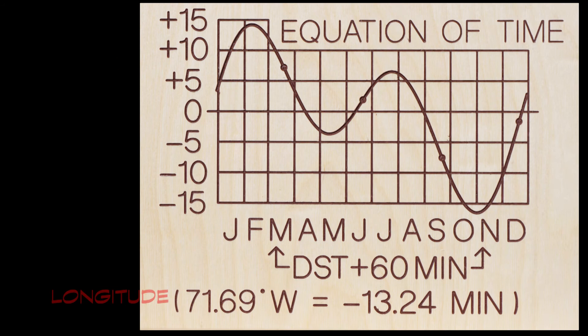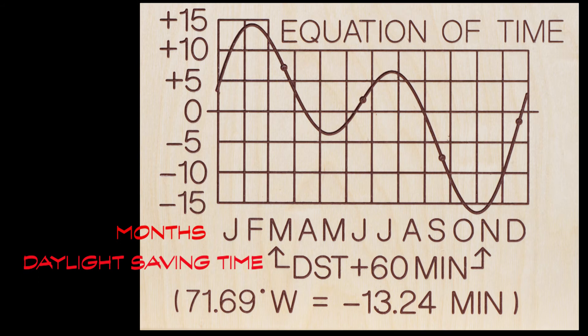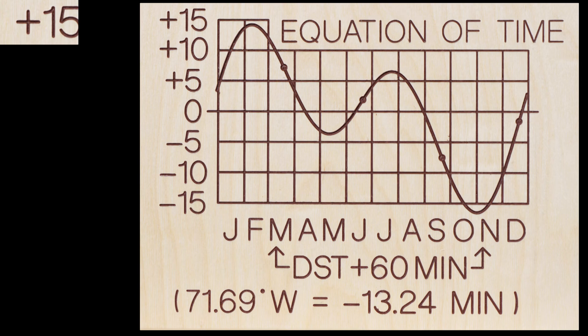After longitude, daylight saving time is yet another complication when using sundials. For most of the year in the U.S. — from the first Sunday in March to the first Sunday in November — we need to add an hour to the sundial reading. About 40% of the world still uses some form of daylight saving time, but that is declining. Its rationale was to give people a sense of more daylight in the evening and to potentially save energy, but increasingly its benefit is being questioned and may eventually disappear.